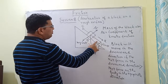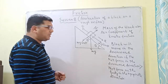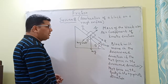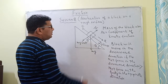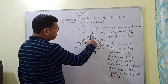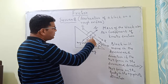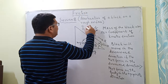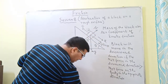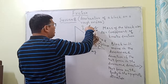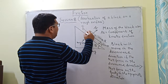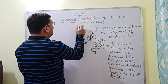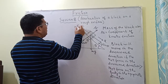Since the coefficient of kinetic friction is mu and the block is moving in the downward direction, the frictional force opposes the relative motion. So the frictional force acts in the upward direction. I am denoting this frictional force as fs.